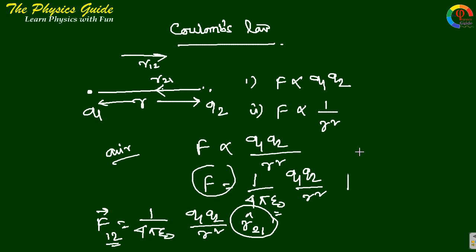When we are interested in the force on q2 due to q1, this equals 1 by 4 pi epsilon naught, Q1 Q2 by r square r 1-2 in vector, that is from 1 to 2.